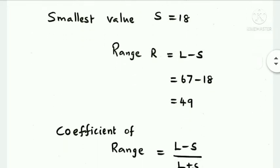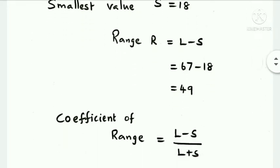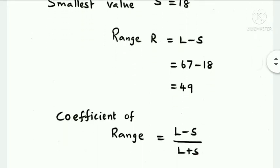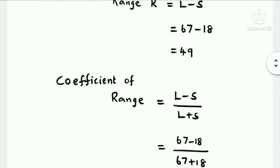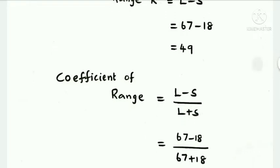Now for the coefficient of range. The formula is: L minus S divided by L plus S. Here L equals 67 and S equals 18, so we compute 67 minus 18 over 67 plus 18.